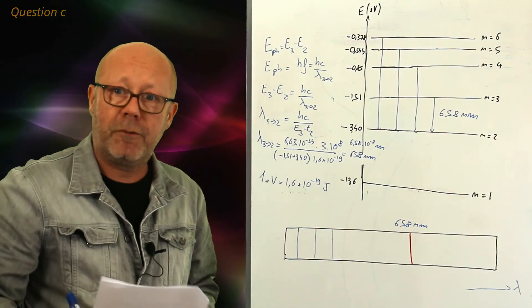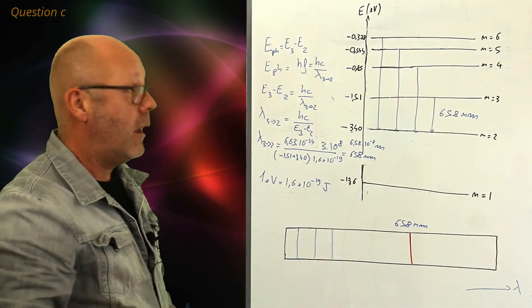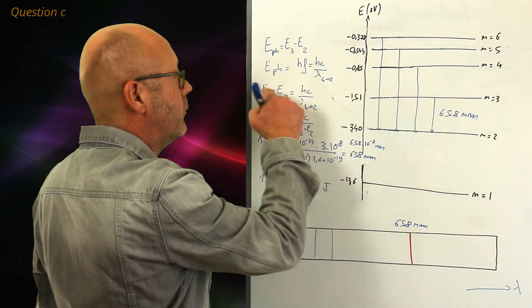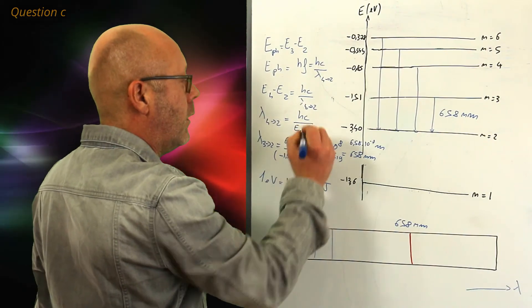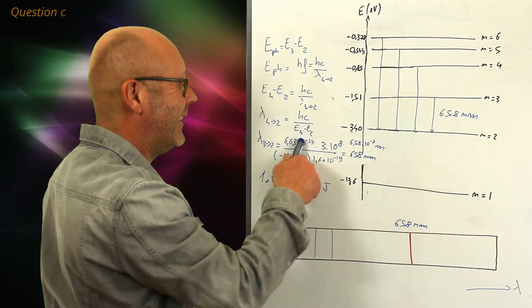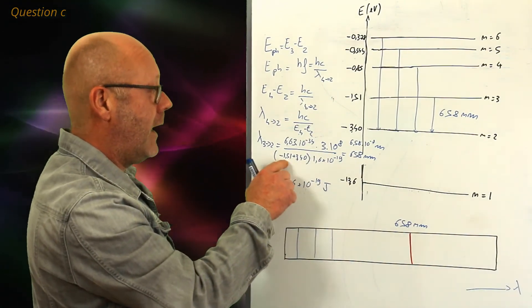If I want to calculate, for example, level 4 to 2, I repeat the operation. I just change my indexes. This number is the same. Oh, sorry, this one. This one. I would just need to change the energies here.